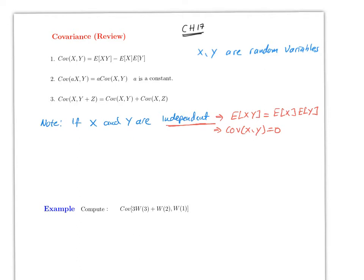Also note: the variance of X is the same thing as the covariance of X with X, because if you plug it into formula number one, this gives you E[X²] minus (E[X])², which is the definition of variance.